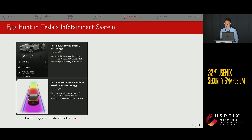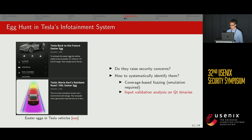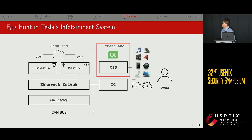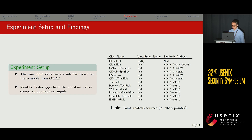We present an interesting case study using QtIE for egg hunting in Tesla's infotainment system. This is motivated by the fact that Tesla cars are known to contain many Easter eggs to entertain users — but do these Easter eggs raise security concerns, and how can we systematically identify them? We chose to perform static input validation analysis on the Qt binary code. We extracted the central information display firmware, which serves as a Qt-developed front end, then selected user input variables based on symbols recovered by QtIE, and identified Easter eggs from constant values compared against these user inputs using a simple taint analysis.